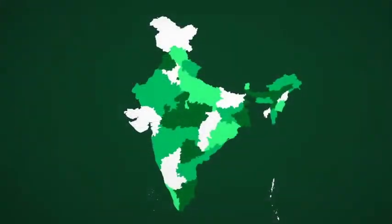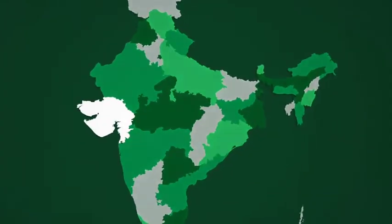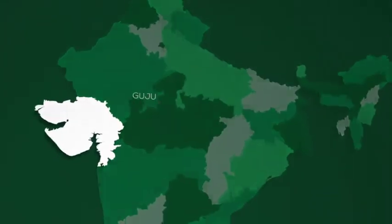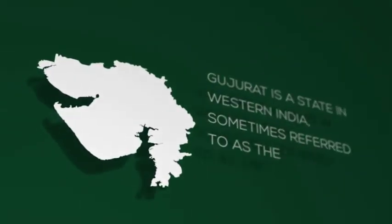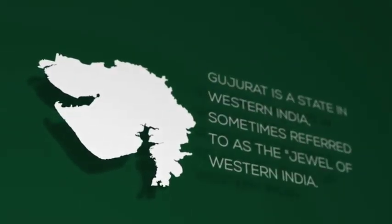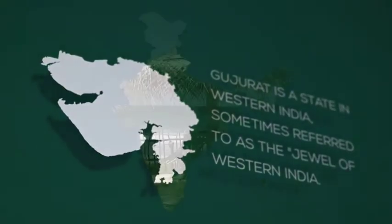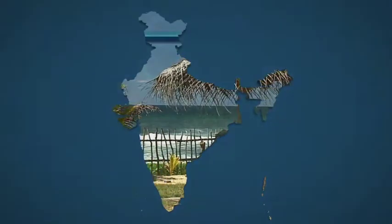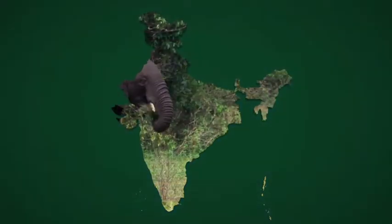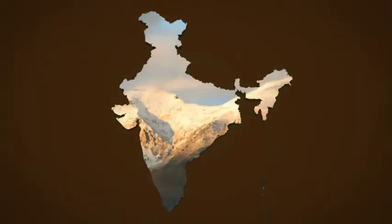Zoom in to areas of interest and hide the layers you don't need to focus on certain states. Animate individual states and add your own text and camera moves as required. Use your own content as a texture for the country map.